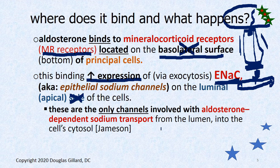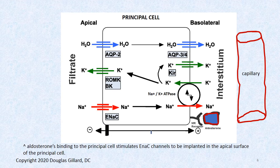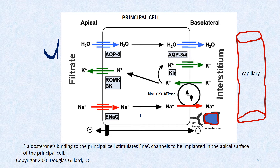These are the only channels involved with aldosterone-dependent sodium transport. So here's the newly formed urine — aka the filtrate — and we have an aldosterone molecule binding to an MR receptor, which stimulates the implanting of this ENAC channel. This ENAC channel allows sodium to diffuse down its concentration gradient into the cell. Now we got sodium in the cell — how do we get it out? Another type of channel is made: the sodium-potassium ATPases are also made by that binding.